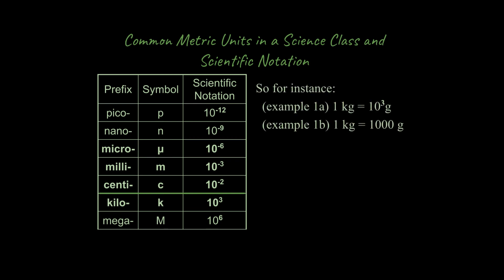So if we wanted to read this table, you could say, if we're looking at kilo, for instance, right here, you could say one kilogram is equal to 10 to the three grams. Or you could write this not using scientific notation and say one kilogram is equal to a thousand grams. That's one way of reading this table right here.